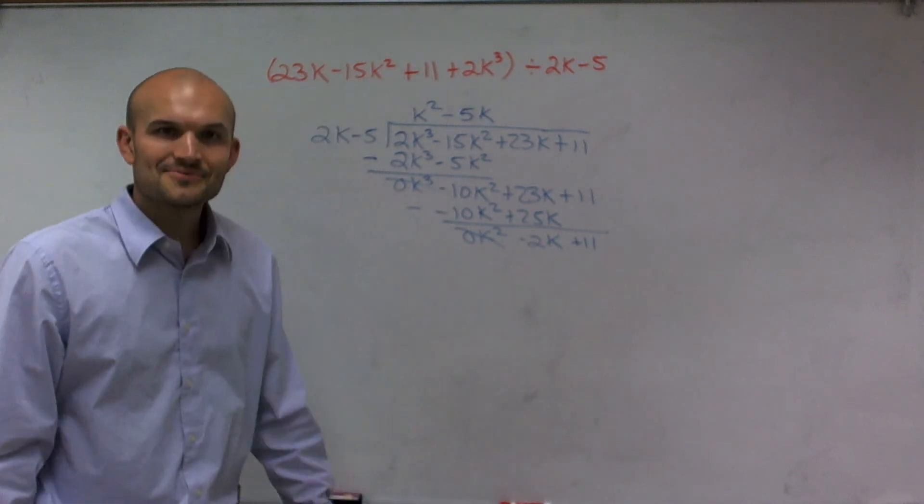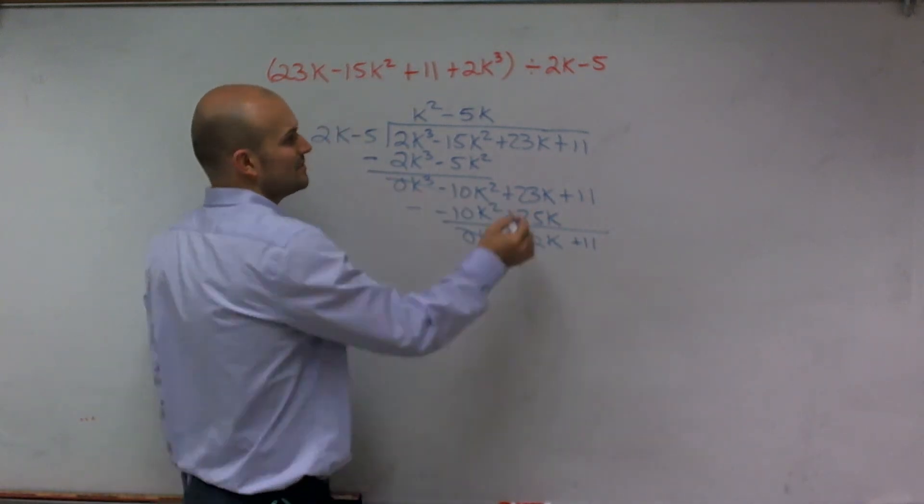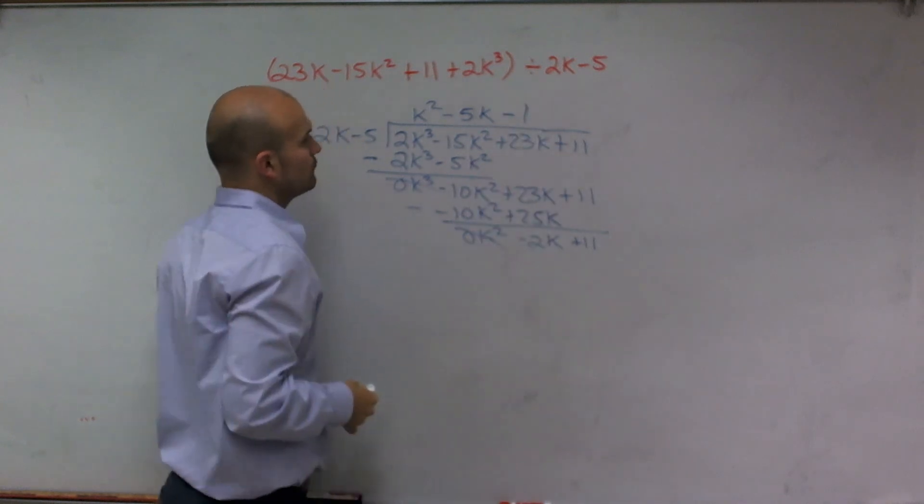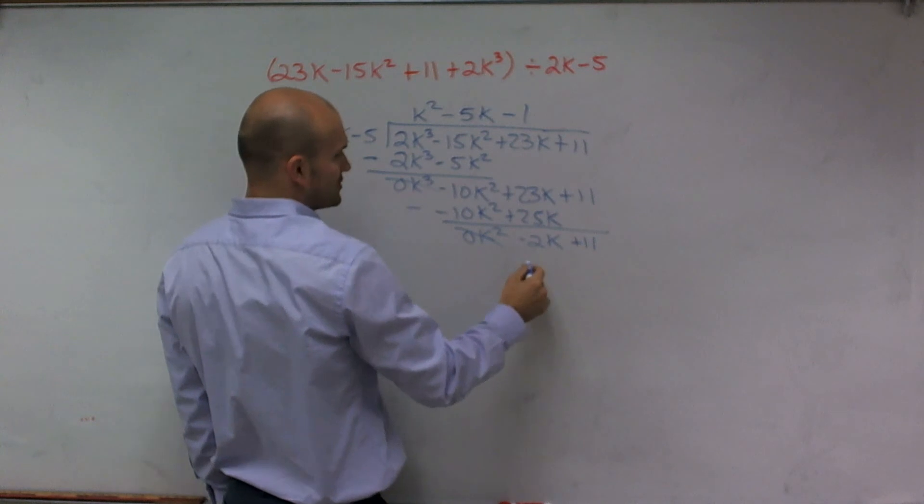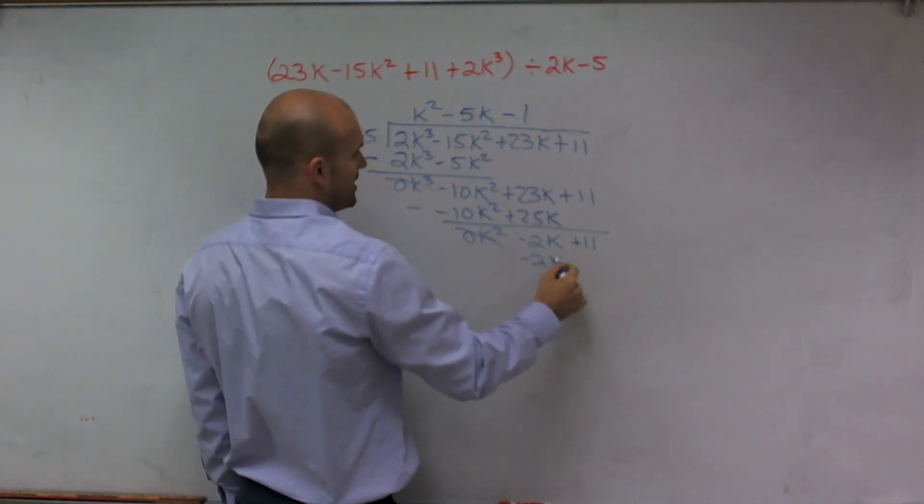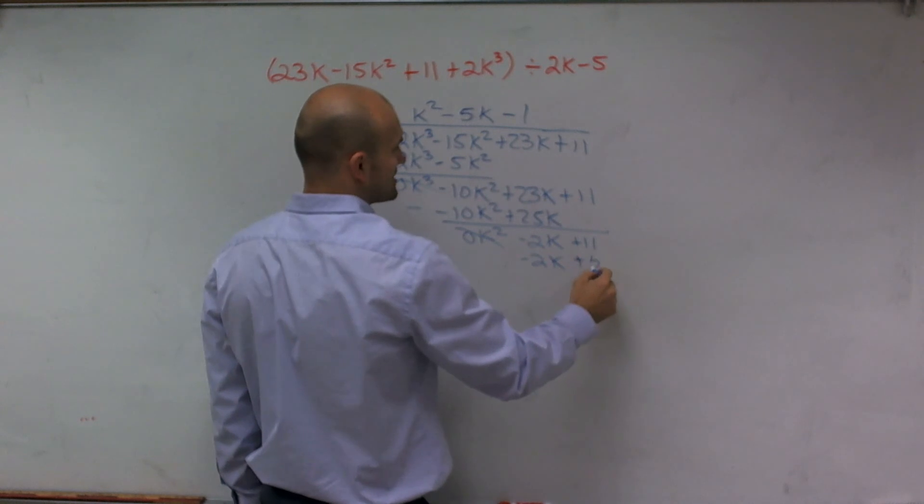All right. Last one. It's not that bad, is it? 2k divides into a negative 2k negative 1 time. Negative 1 times 2k is going to give you a negative 2k, and negative 1 times negative 5 is going to give me a positive 5.